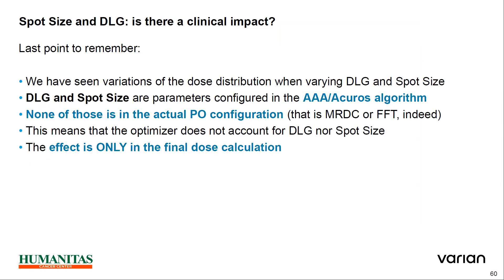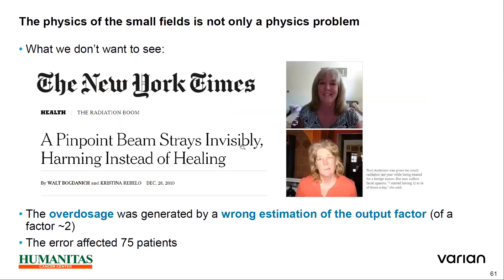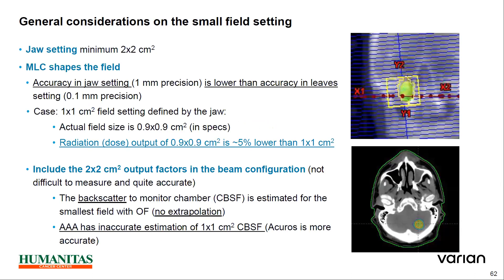The last point to remember: we have seen variation of dose distribution when varying DLG and spot size. DLG and spot size are parameters configured in AAA and AcurosXB algorithms. None of these are incorporated in the actual fluence optimization. The optimizer does not account for DLG and spot size — the effect is only in the final dose calculation. If running VMAT optimization with intermediate dose, they may be incorporated depending on the dose calculation method chosen. But for the actual fluence optimization, these parameters are not incorporated. One has to be aware of how we use these small fields.